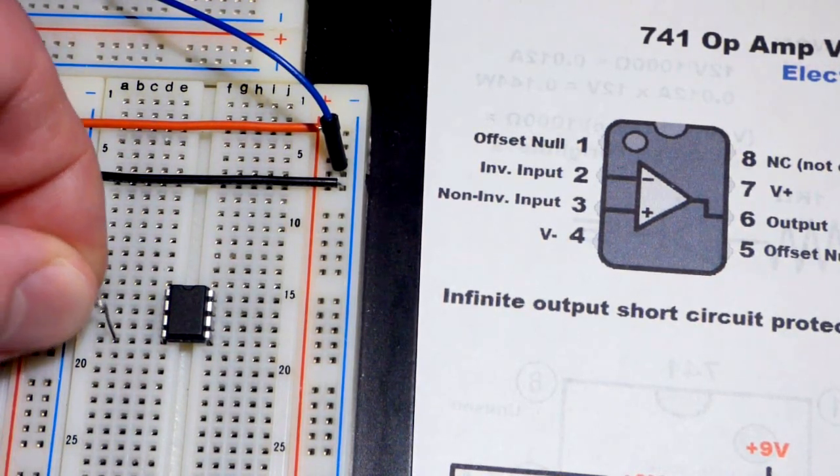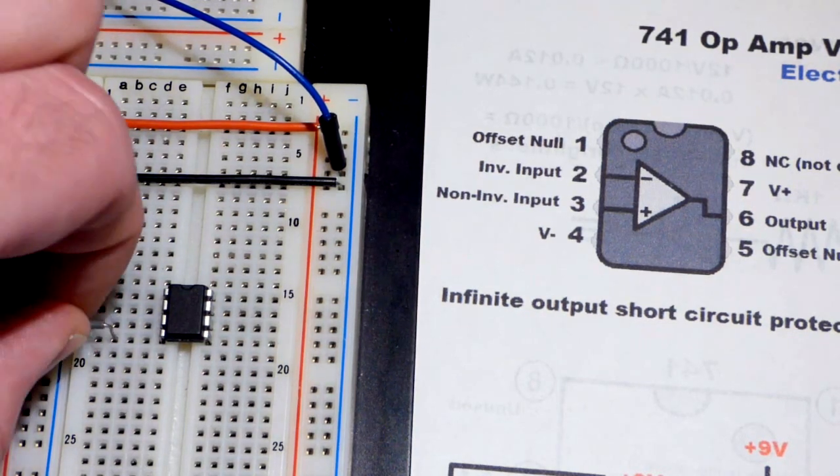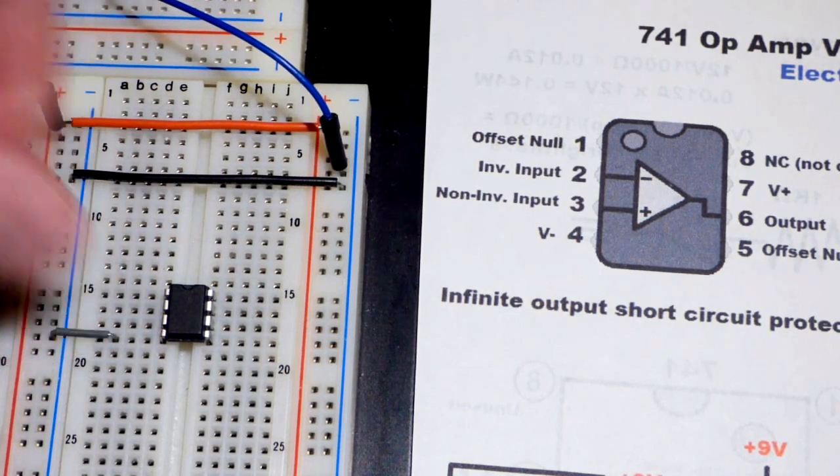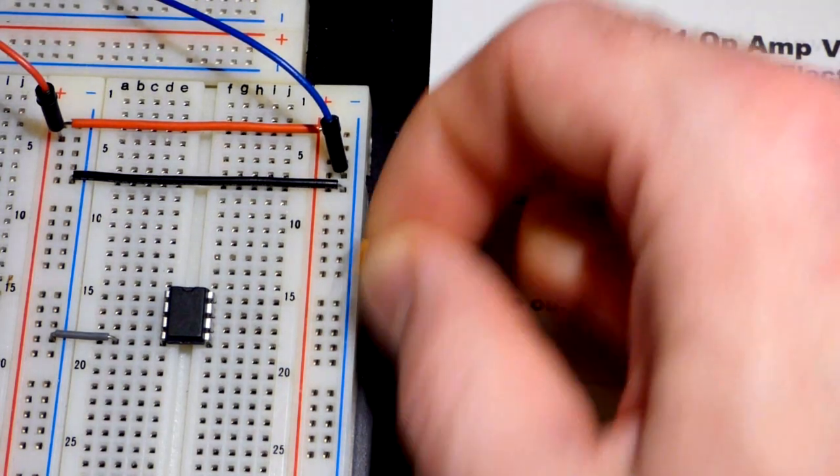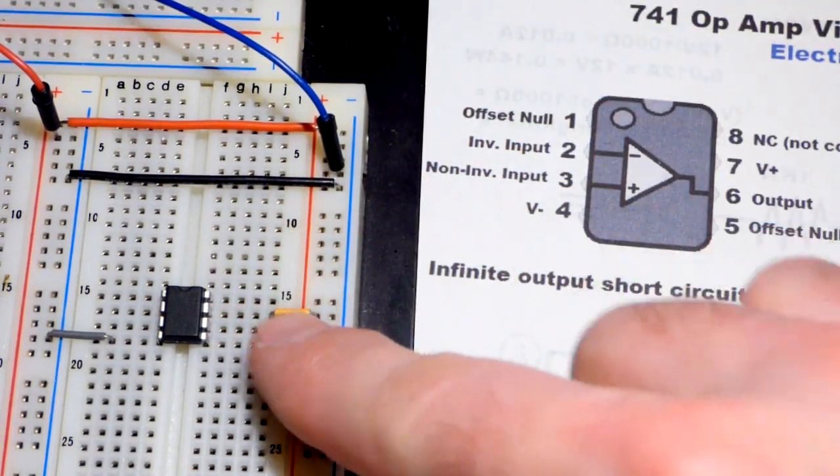Now, these may not be marked down on the schematic, you may not see the power pins at all, and that helps save space. But you should be aware, of course, that you have to power this, you always have to power it. It needs power from the rail to do its thing. So there we go, pin number seven.